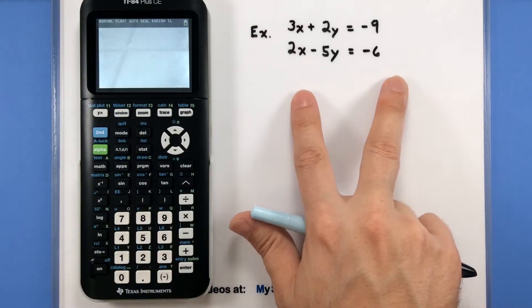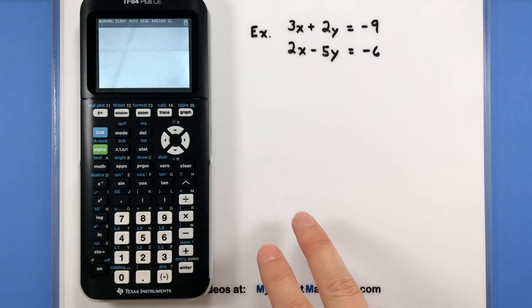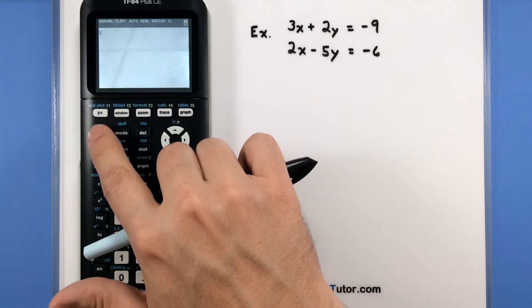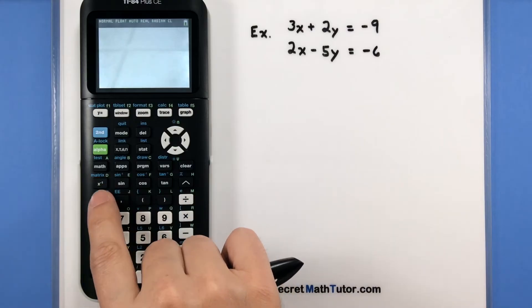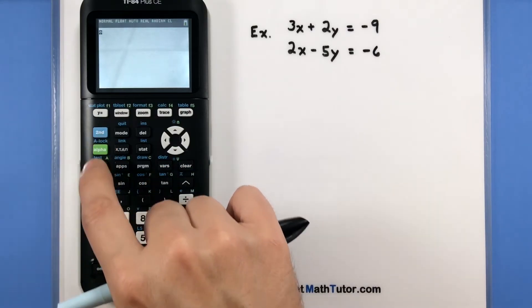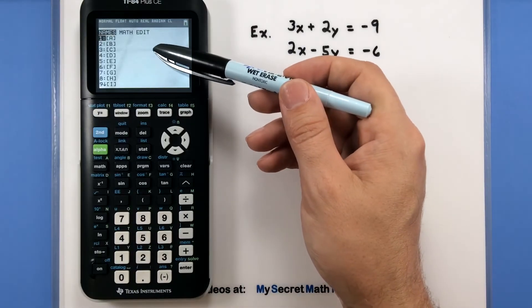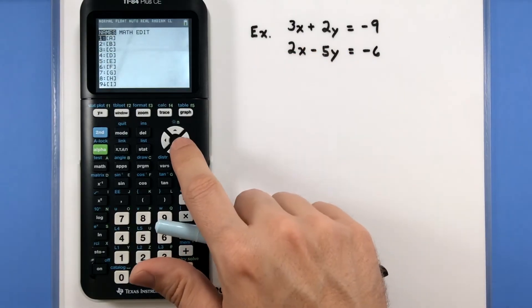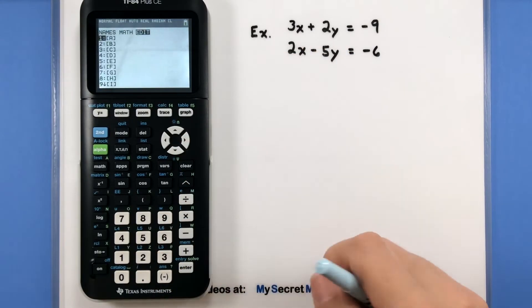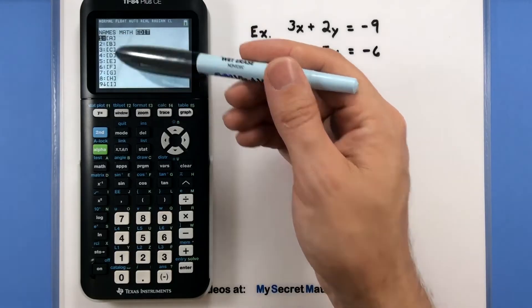Step one is to get our system into the calculator and make it look more like a matrix. You'll want to press your second button and then the matrix. It's right above that x to the negative one. This will bring up some options, and we'll be working down this list from the right to the left. So let's go over there to edit.